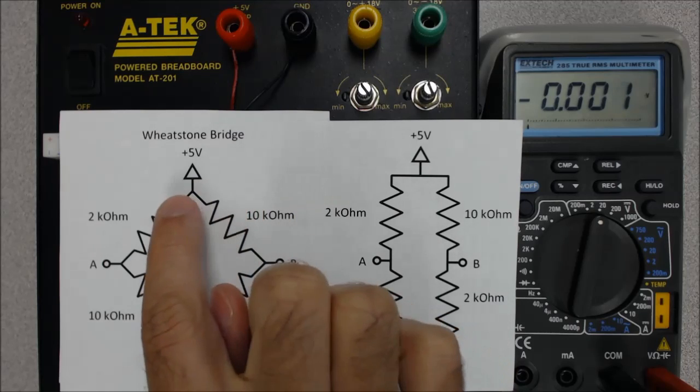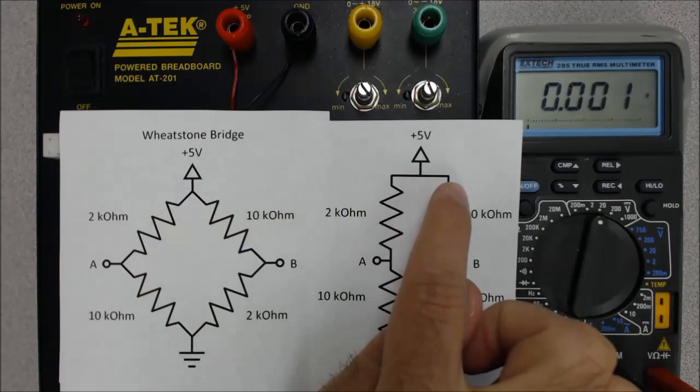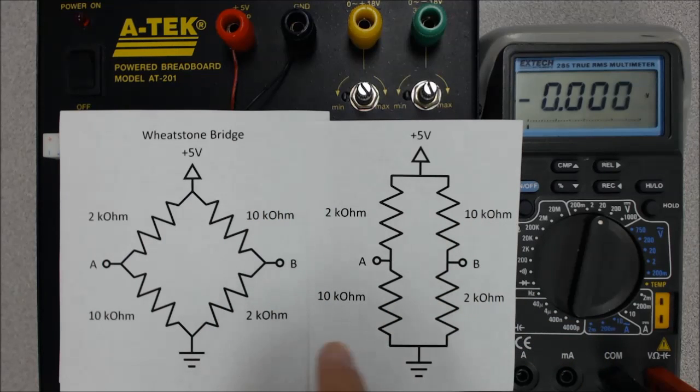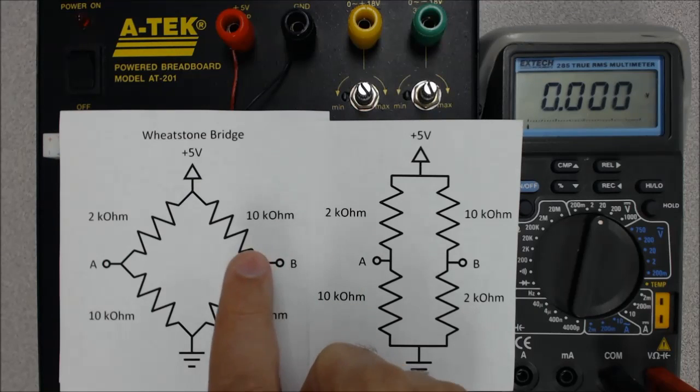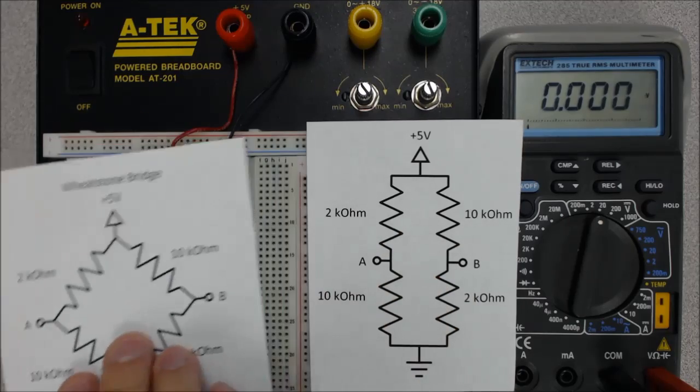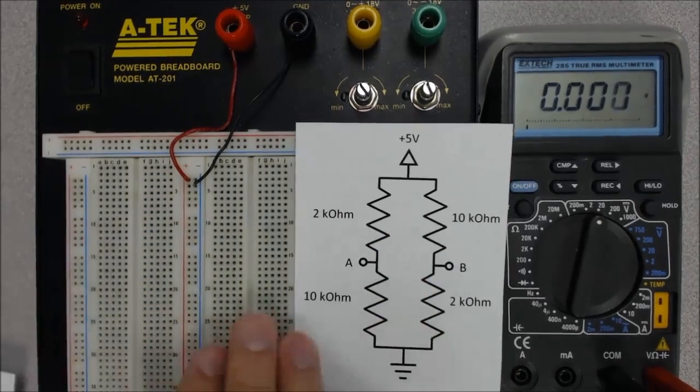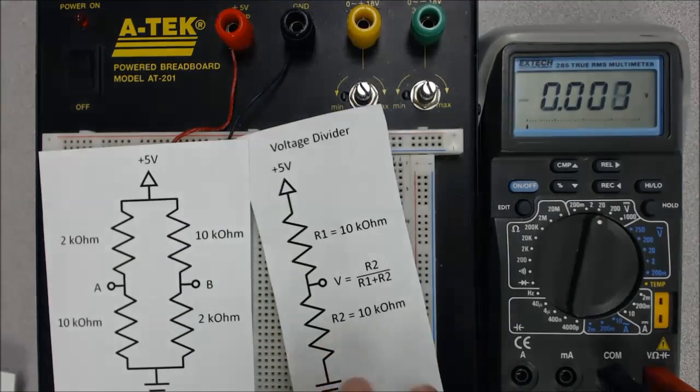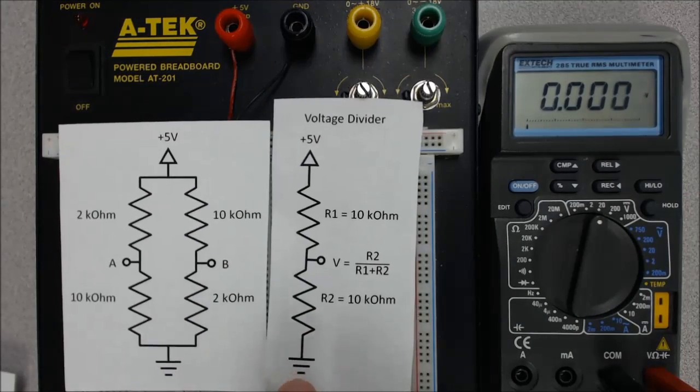All I've done is taken this node in the center here and broken it out into two sides and then taken the resistors and turned them vertically. But these two circuit schematics say exactly the same thing. So it's important to be able to switch between what's drawn on a schematic and what helps you understand the circuit better. Because hopefully if I show you this schematic, it makes sense that all the Wheatstone bridge is is just two voltage dividers put together in parallel.